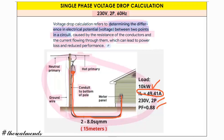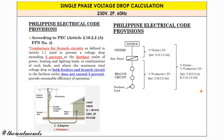We have guidelines and code from the Philippine Electrical Code (PEC), specifically Article 2.10.2.2. Conductors for a branch circuit shall be sized to prevent a voltage drop exceeding 3% at the farthest outlet of power, heating, or lighting loads, where the maximum total voltage drop of both feeder and branch circuit to the outlet does not exceed 5%.